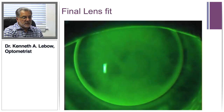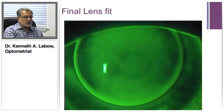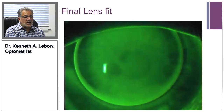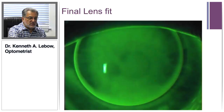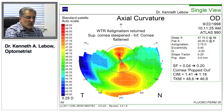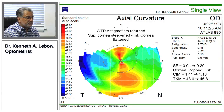Looking at the actual fluorescein pattern of the lens on the eye, it demonstrates a uniform fluorescein pattern with ever-so-slight bearing in the 3 and 9 o'clock position — to get rid of that, all we really have to do is make the lens a little bit smaller. So the question becomes: what happened to the corneal topography when we made this lens a whole lot steeper?